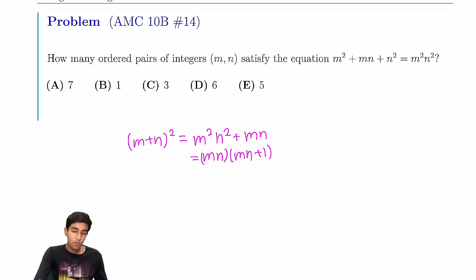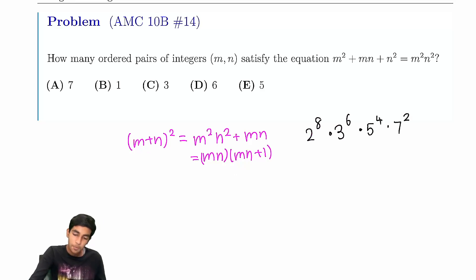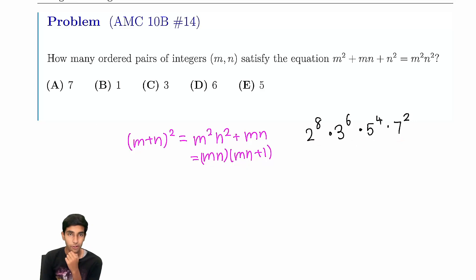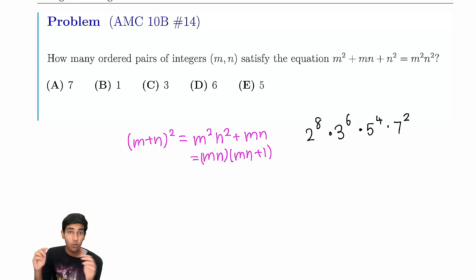Notice that the product is a perfect square, which means in the prime factorization all exponents are even. We have mn and mn+1 — they're consecutive numbers. Do you know anything special about consecutive numbers? Like 2 and 3, or 3 and 4? Their GCD — they don't share any factors, their GCD is 1.